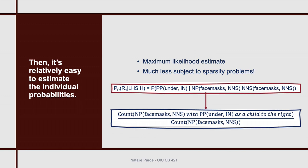To find the actual values for those individual probabilities, it's relatively easy, especially compared to what it would have been otherwise. These individual probabilities are much less subject to sparsity problems, and we can just compute them using maximum likelihood estimates. Basically, to compute one such probability, we would take the number of noun phrases with a head word of 'face masks' and part of speech tag NNS that have a prepositional phrase with a head word of 'under' and part of speech tag IN as a child somewhere to the right, and divide that by the number of noun phrases with a head word of 'face masks' and part of speech tag NNS overall.